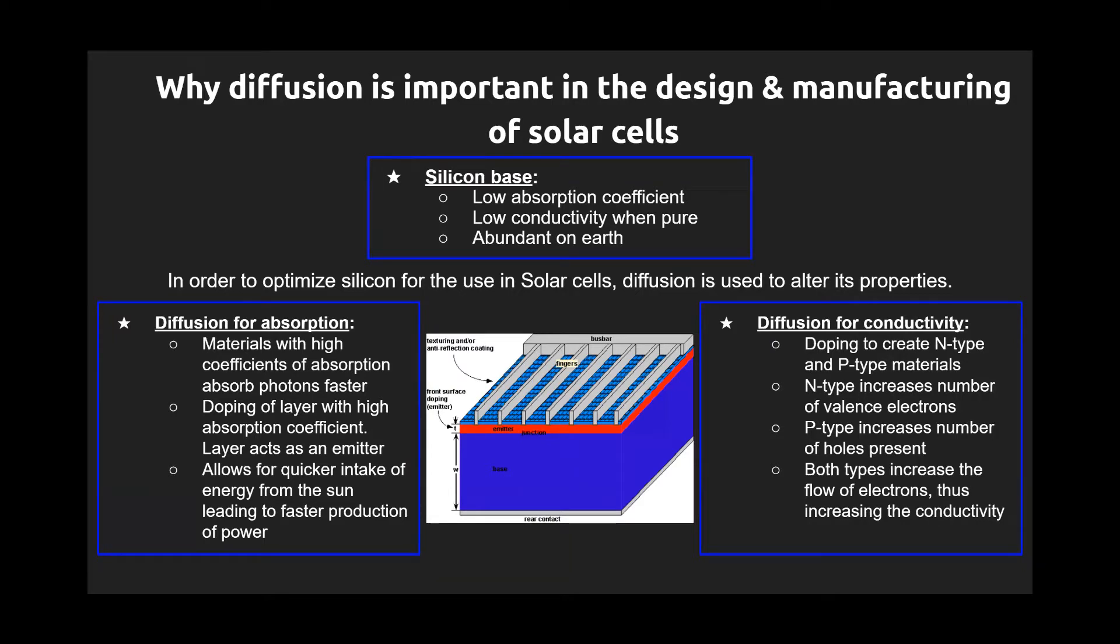Diffusion plays a large role in the design and manufacturing of solar cells. Solar cells are typically made with a silicon base since it is abundant on Earth. However, silicon has a low absorption coefficient and conductivity in pure form. Therefore, diffusion is used to optimize both properties when making solar cells.